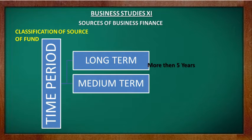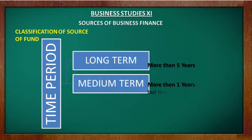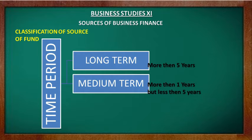Medium-term sources refer to finance requirements for a period of more than one year but less than 5 years. A business may use medium-term sources to raise funds for research and development, to update technological changes, or for the launch of new products. Examples include borrowings from commercial banks, public deposits, and lease financing.